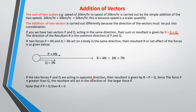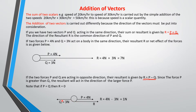Now if the two forces are moving in opposite directions, the resultant is found by subtracting: you minus the smaller vector from the bigger one. So the resultant R equals P minus Q. Since vector P is greater than Q, the resultant acts in the direction of the larger force — the direction of P. As shown in this diagram, they are acting in opposite directions, so the resultant is 1 newton in the direction of P. If the two vectors P and Q are equal and acting in opposite directions, the resultant equals zero.